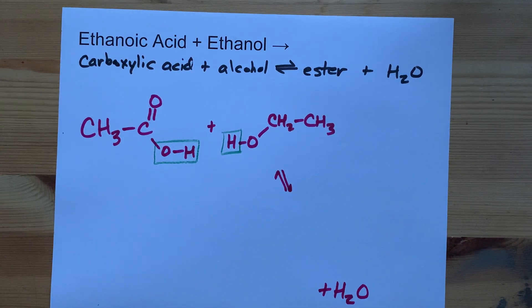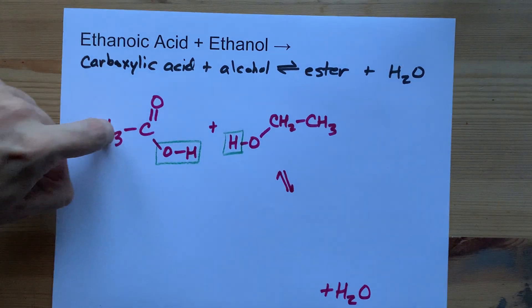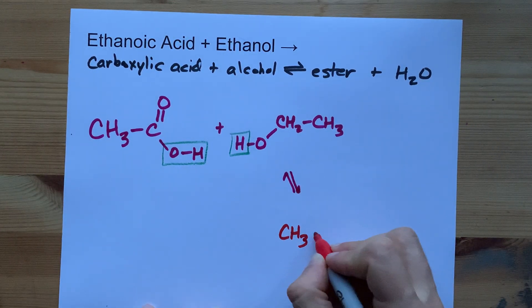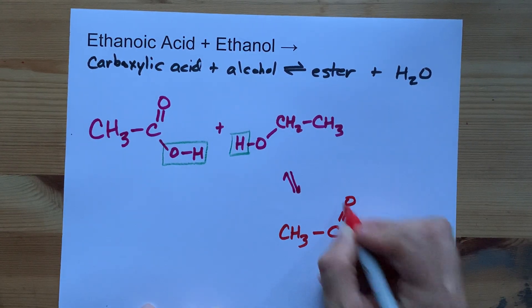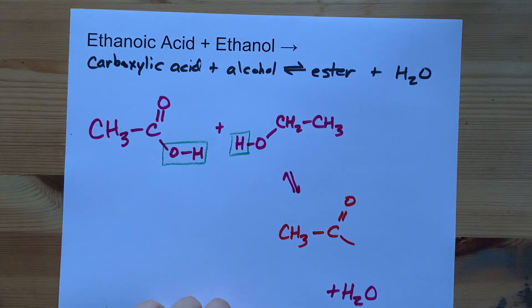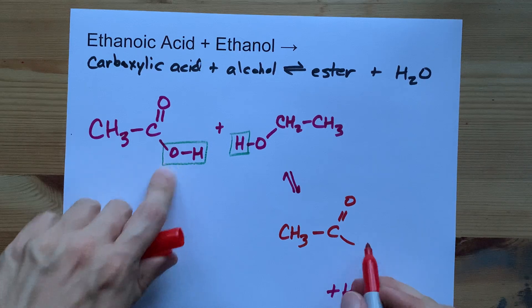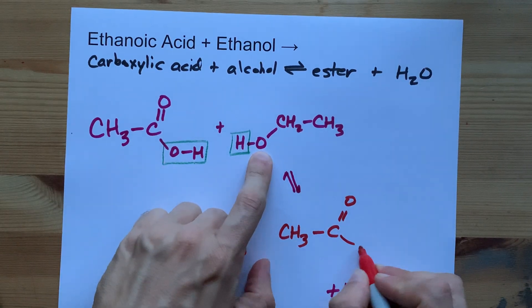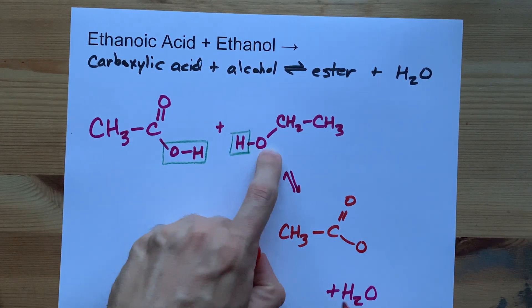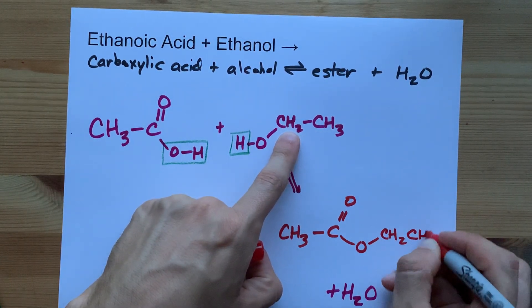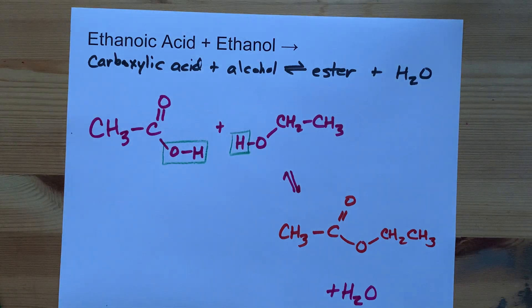And then the other main product is exactly what you have here. CH3C with a double bonded O, and it's got to be connected to something. It happens instead of being connected to that O, it's connected to that one. Then whatever it was still connected to, you just keep going with that. CH2CH3. There you go.